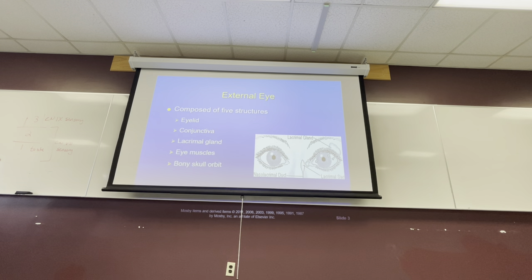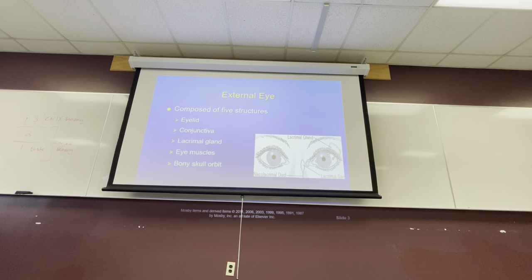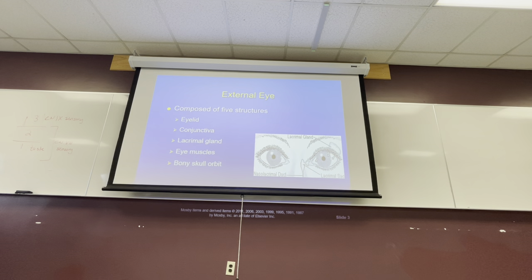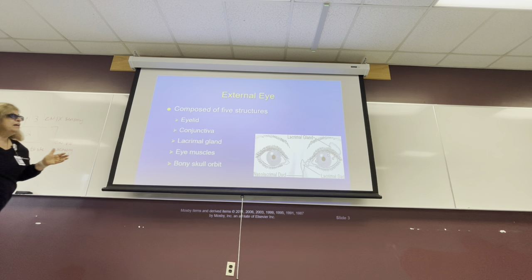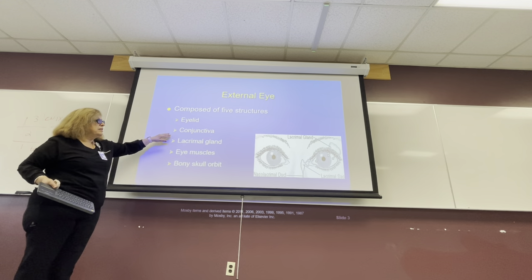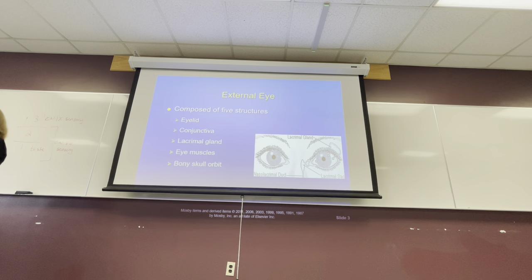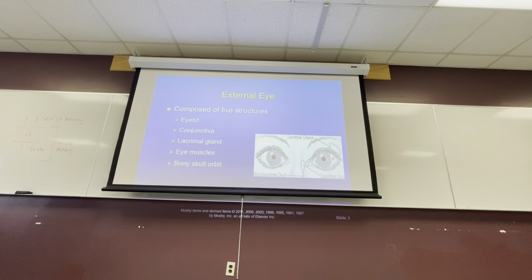If we're going to look at the external eye — what do you see? You see the eyelid, which is covering the eye. Also, there is the conjunctiva. If you're going to test the conjunctiva, you bring the eyes down and look at the conjunctiva.